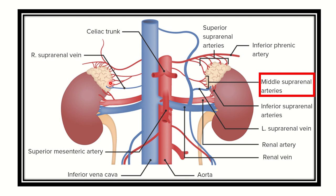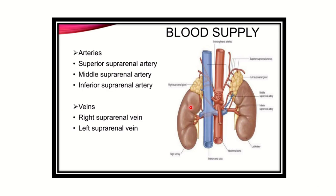There is only one vein on each side. On the right side, it drains into the inferior vena cava. On the left side, the left suprarenal vein drains into the renal vein.